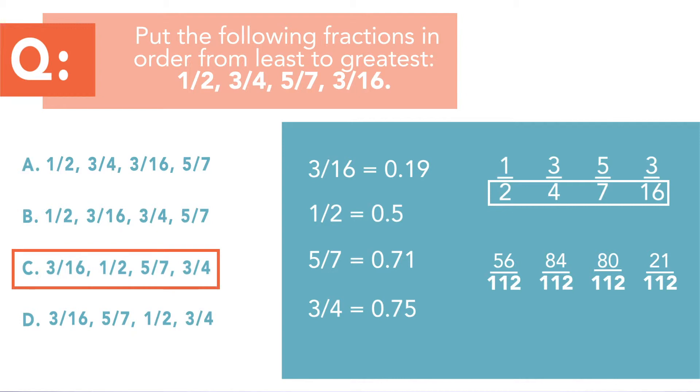That's the correct order from least to greatest. This type of ordering numbers is very common — from fractions to irrational numbers, it is very common to have to order a set of values from least to greatest.